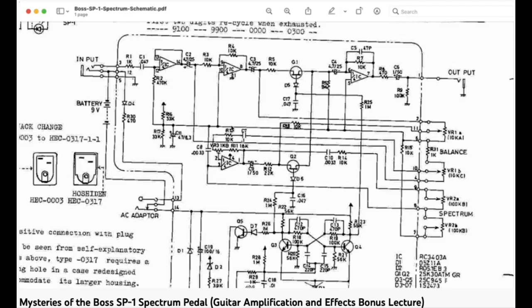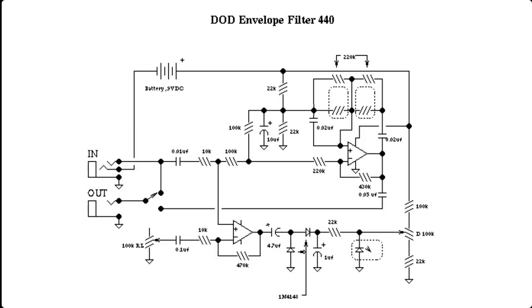In the Boss SP1 pedal, the resistors in the filter are replaced with variable resistors, standard potentiometers, whereas in the DOD 440 pedal, the resistors consist of regular fixed resistors combined with light-dependent resistors, and they use the current flowing through an LED shining on these light-dependent resistors in order to change the center frequency of the filter.